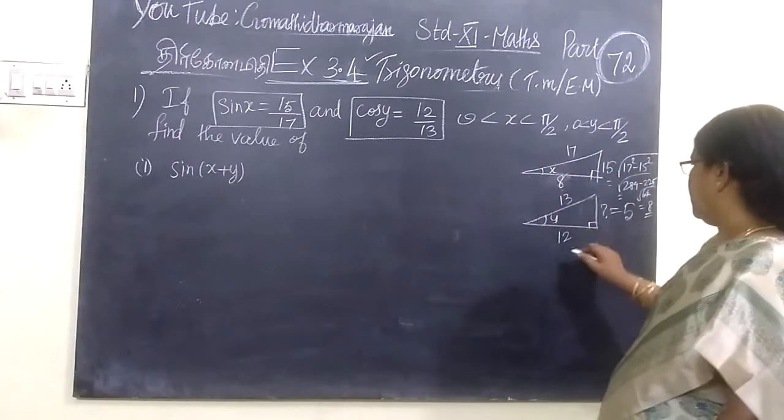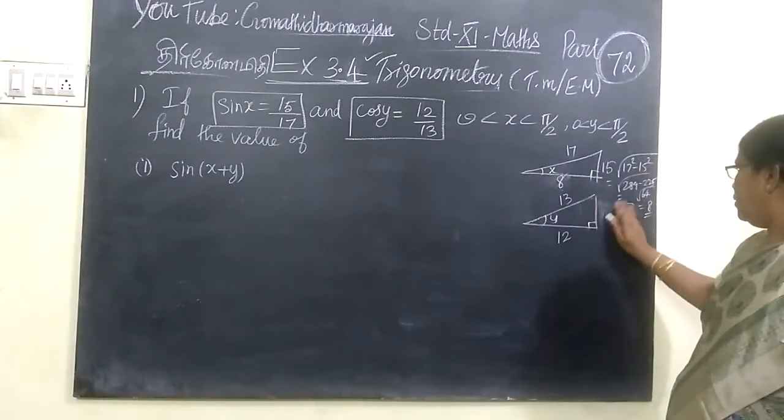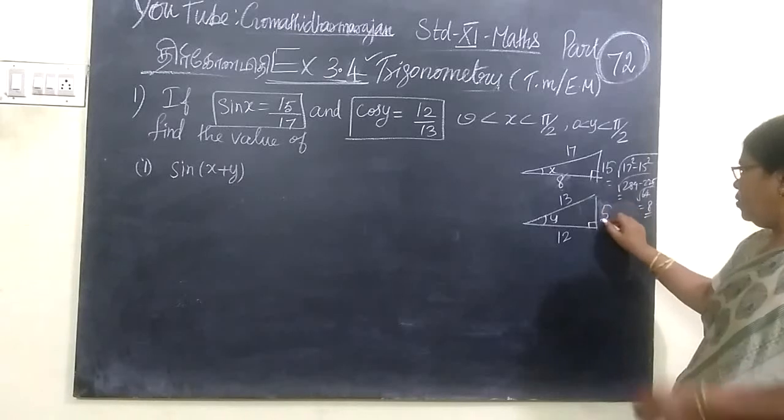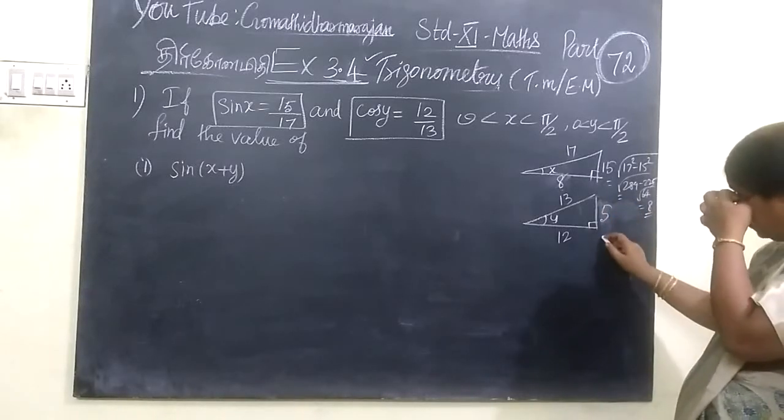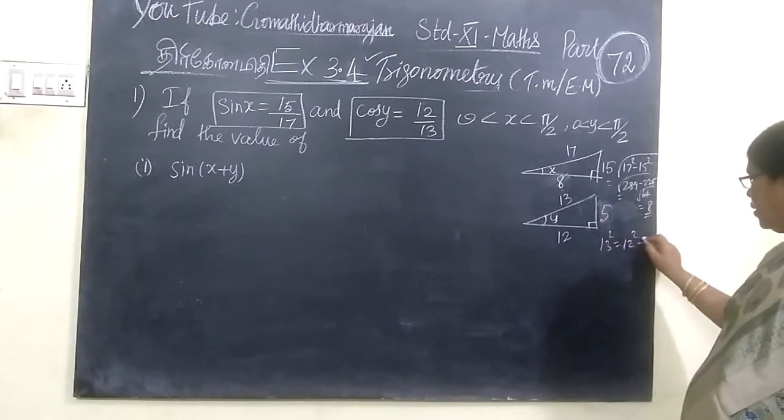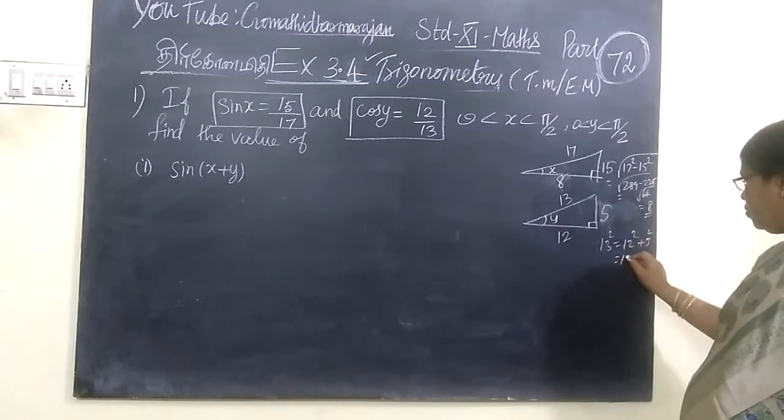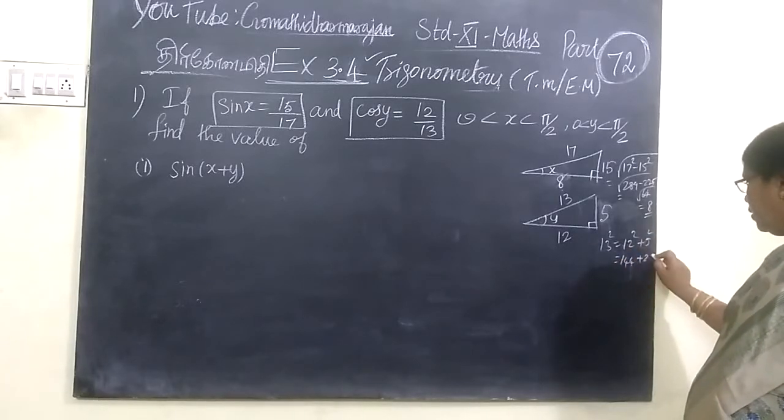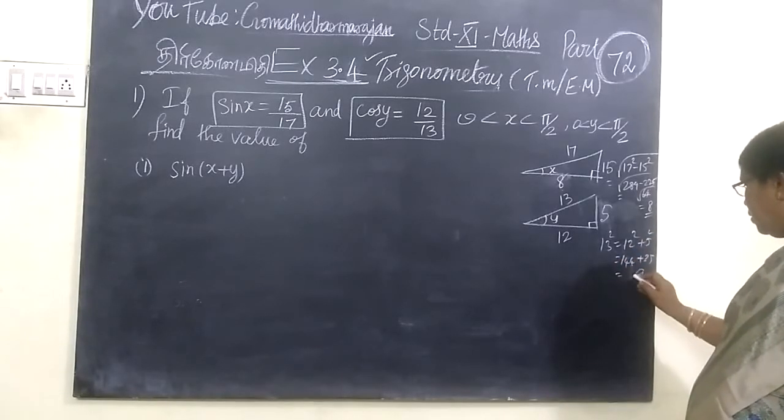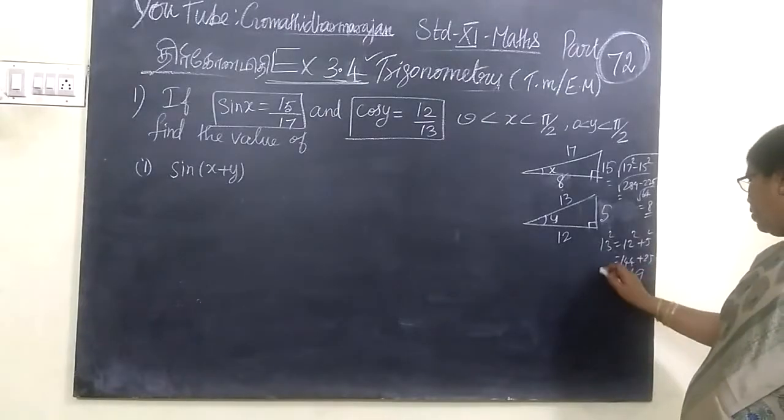Then, this is nothing but 8, this is nothing but 5. This we know, because 13 squared equals 12 squared plus 5 squared. So this is 144, 169, and 25.